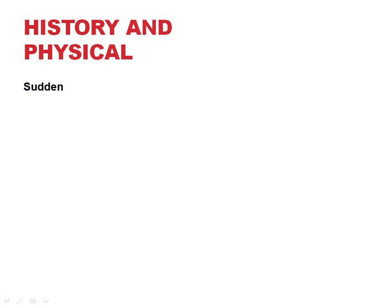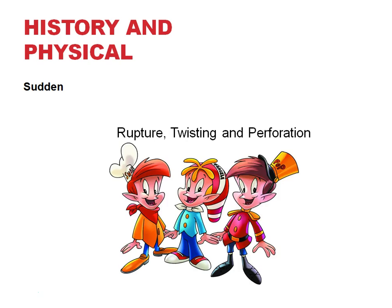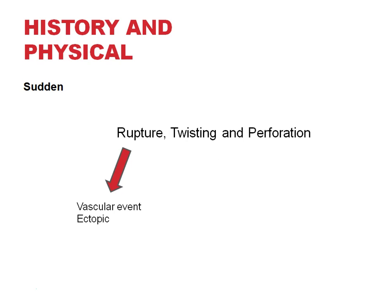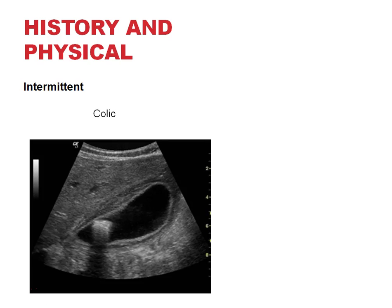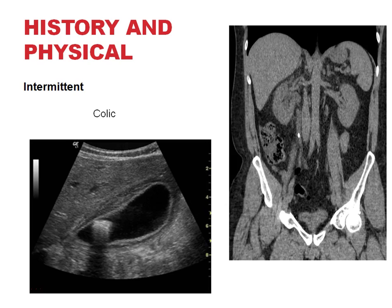Also important is the onset of pain. Sudden onset pain may be due to rupture, twisting, or perforation — what I like to think of as the snap, crackle, and pop of abdominal pain. Rupture could be a vascular event like dissection or AAA rupture, or an ectopic rupture. Twisting can be volvulus or testicular/ovarian torsion. More gradual onset pain is seen in obstruction and infections like diverticulitis. Intermittent pain is seen in biliary or renal colic and intestinal spasms.